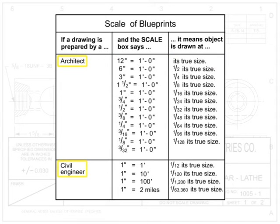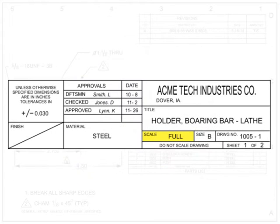Architects and civil engineers use different types of scales, as shown here. The signature block contains all signatures required for the drawing to be officially released and published by the creator. Signatures and approvals should all be signed; if they are not, the drawing may not be an official release that is ready for manufacture.